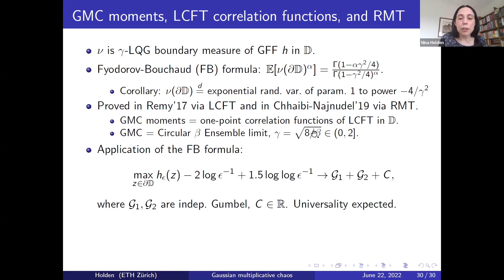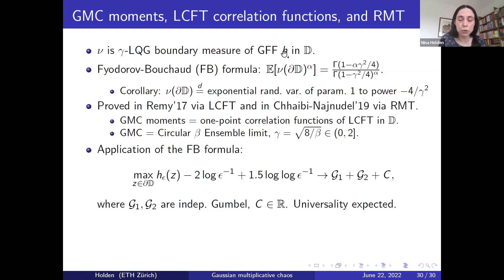Finally, from the Fyodorov-Bouchaud formula it is possible to deduce that the maximum of certain log-correlated fields h_epsilon (smooth approximations to h) behaves according to a particular formula involving two Gumbel random variables. This result can be established in the setting of exactly Gaussian log-correlated fields, and universality is expected — the same result including the appearance of these two Gumbel random variables is expected to hold for a number of other models as well.